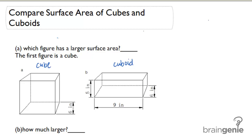So the first thing we should do is remember our surface area formulas. For a cube, we can use 6 times S squared where S stands for the side length of the cube. And for a cuboid we can do 2 times length times width plus length times height plus width times height.